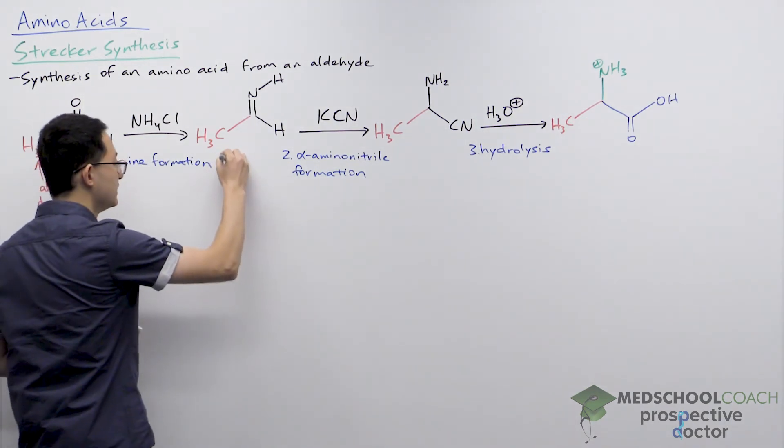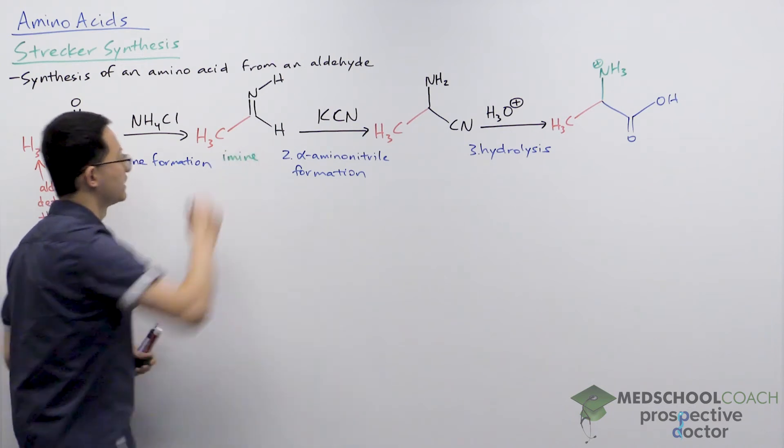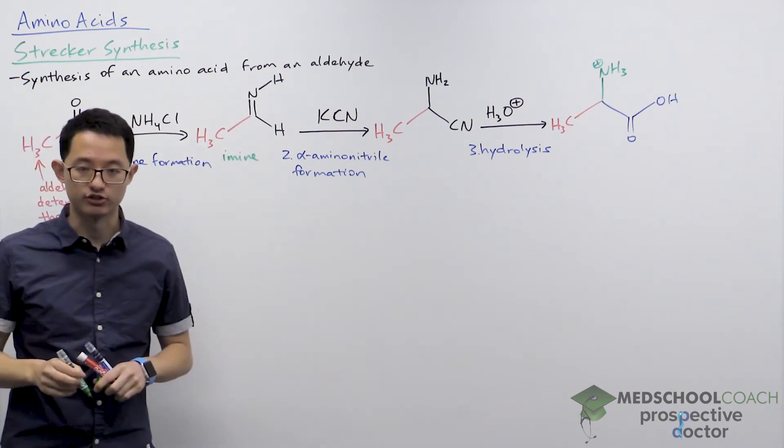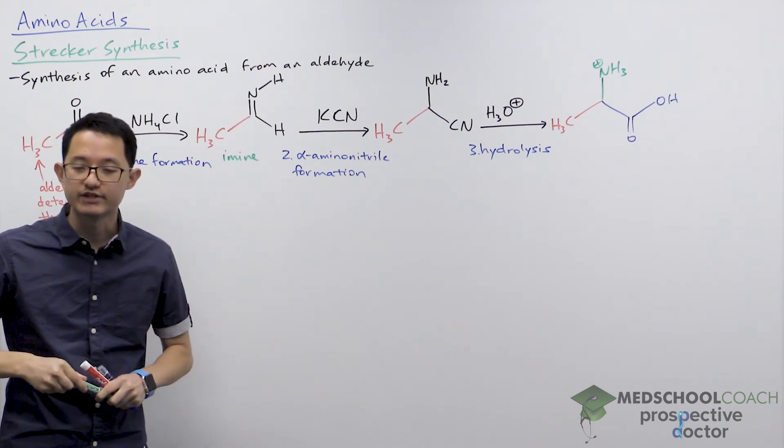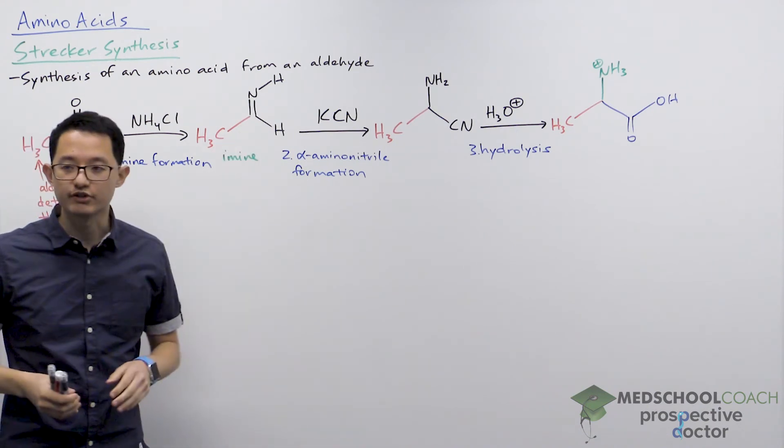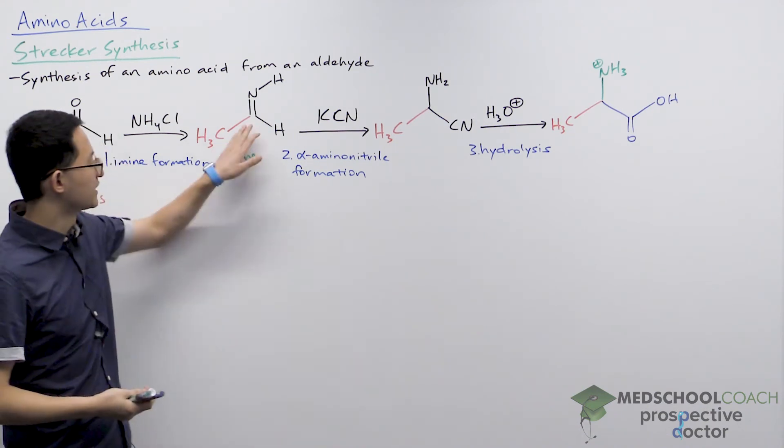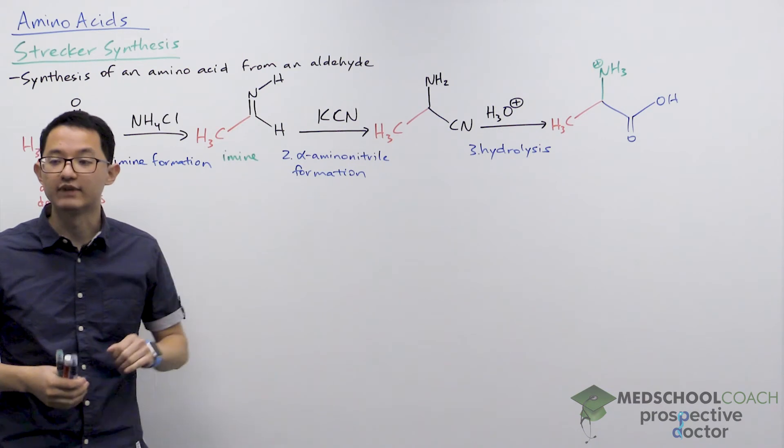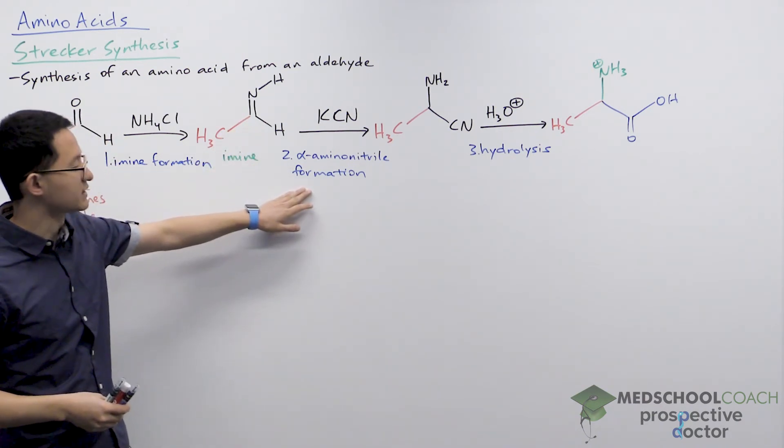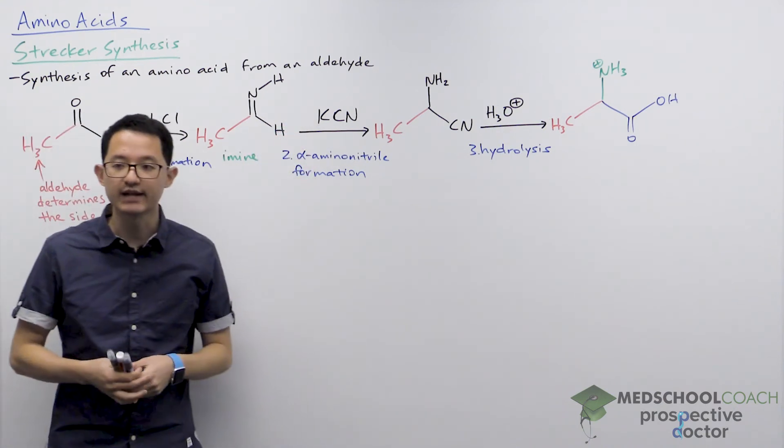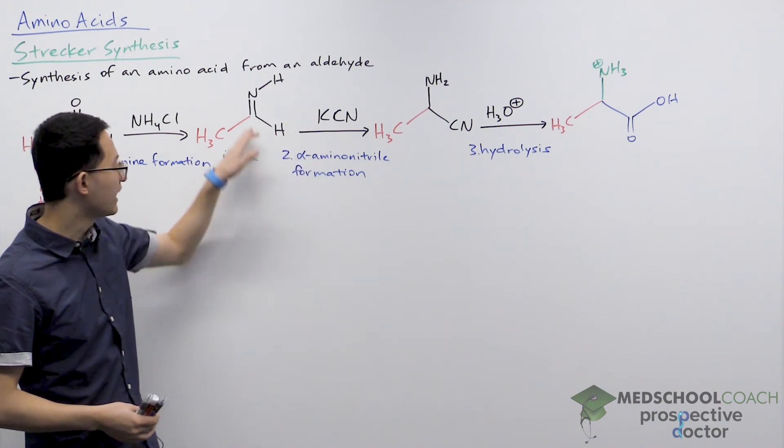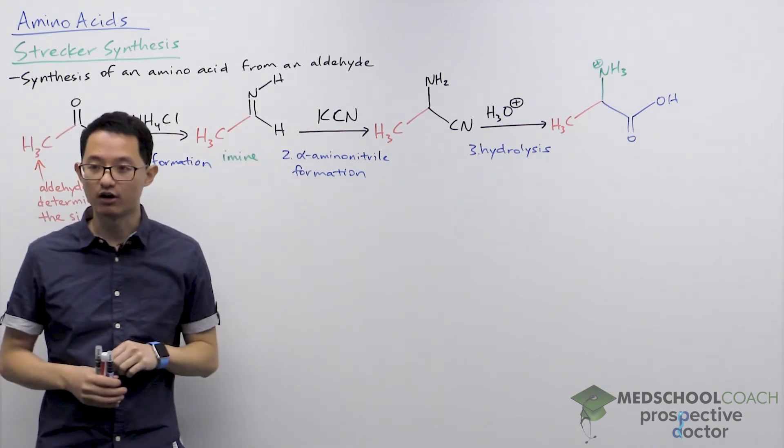So this is an imine. If you recall, here we have a carbon double bonded to a nitrogen. Now the imine in many ways is very similar to the carbonyl. This imine carbon is also electrophilic because nitrogen is more electronegative than carbon. So since this is a good electrophile, if we introduce in our second step potassium cyanide, cyanide CN- is a strong nucleophile and will go ahead and attack the imine carbon.